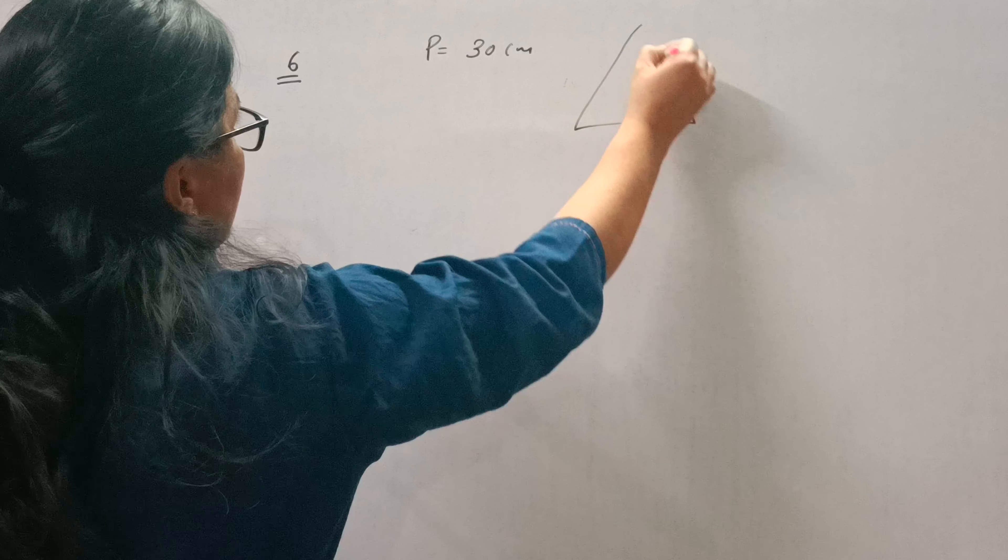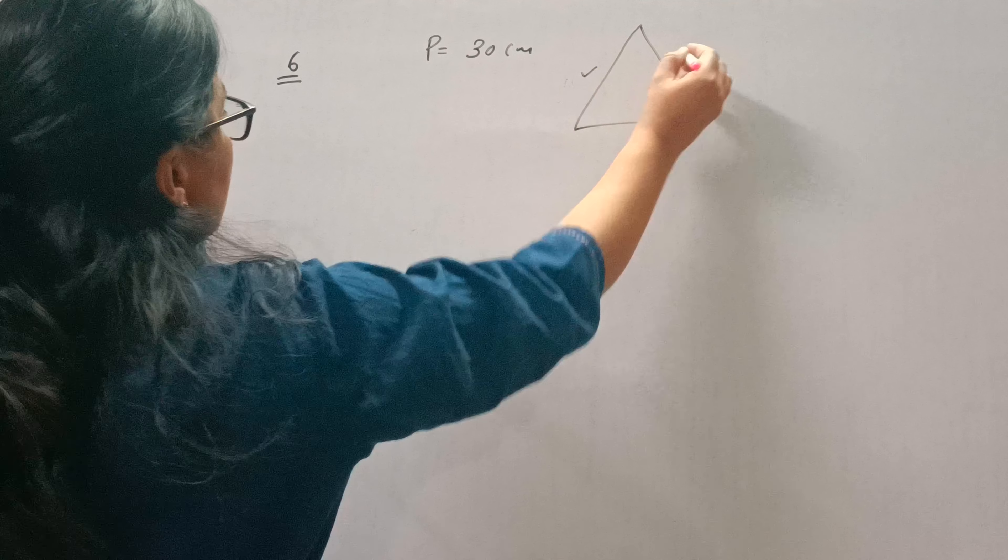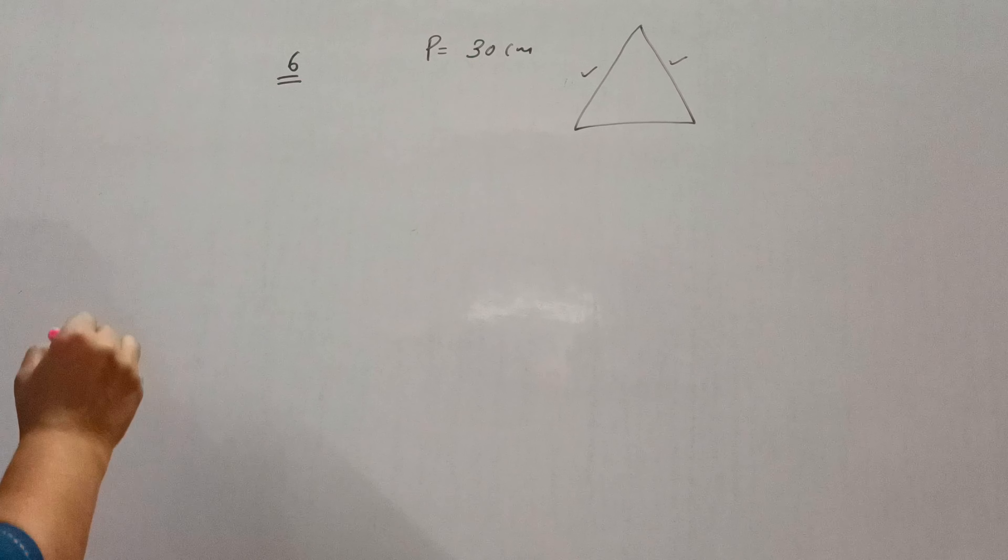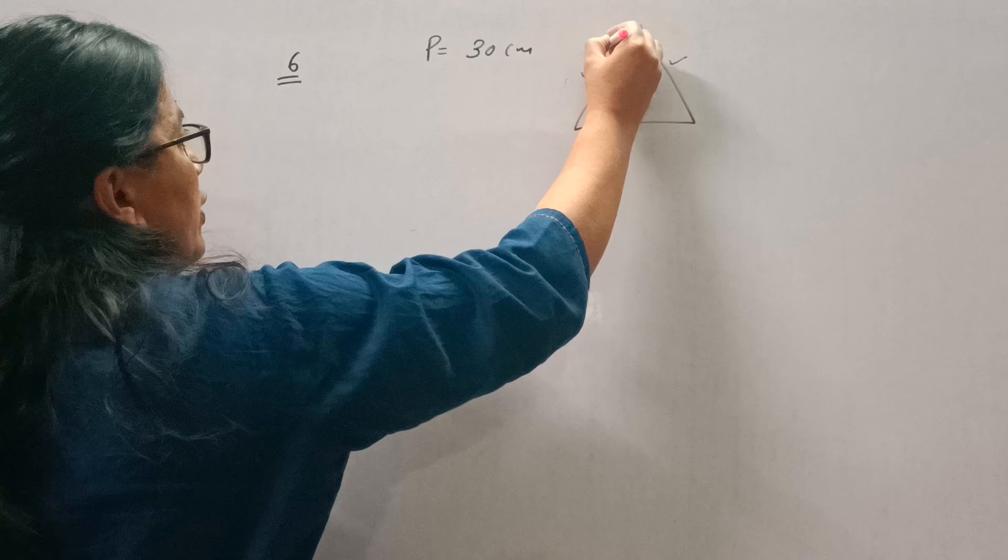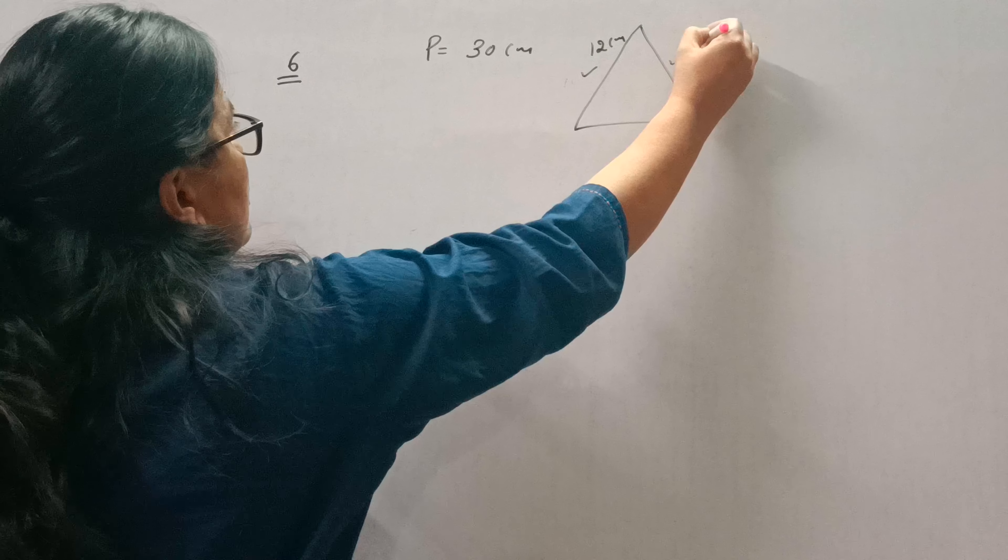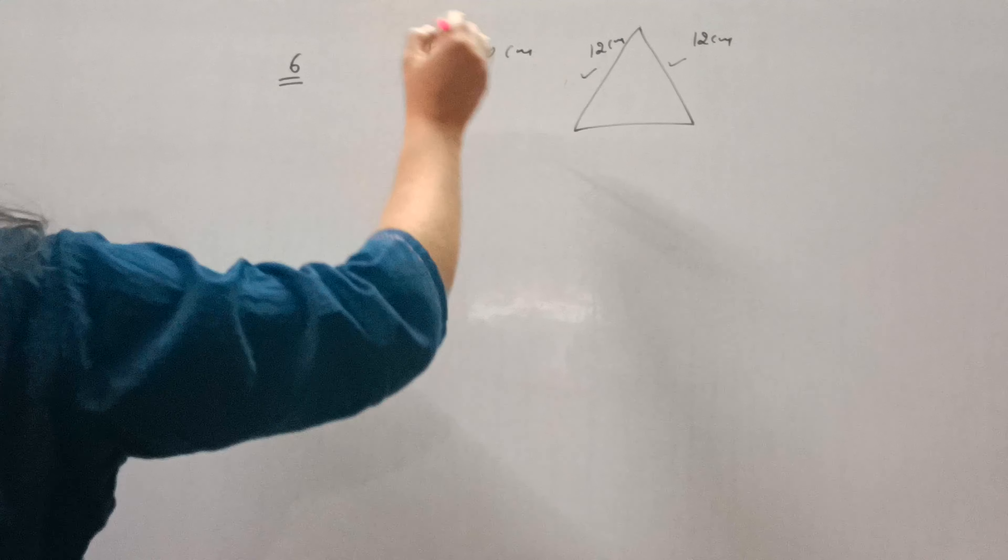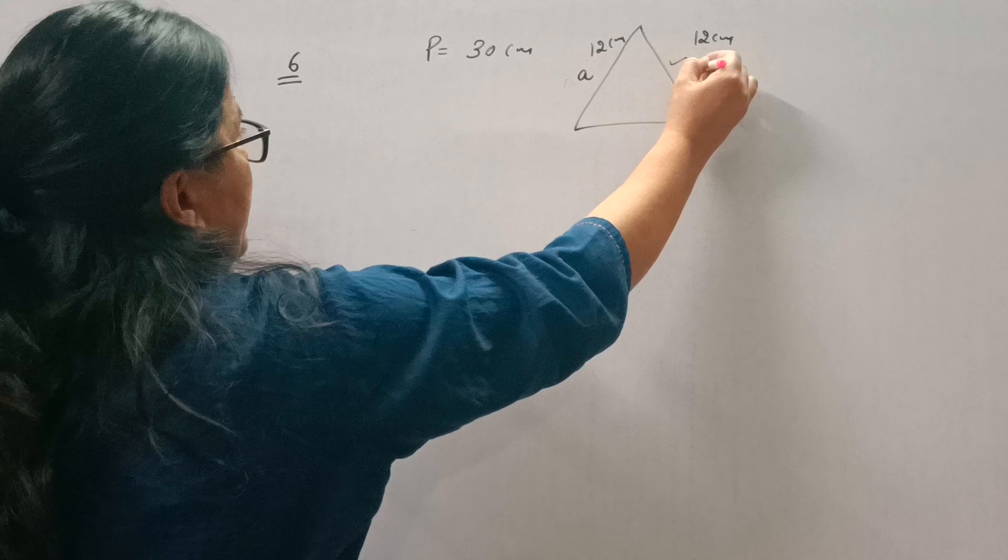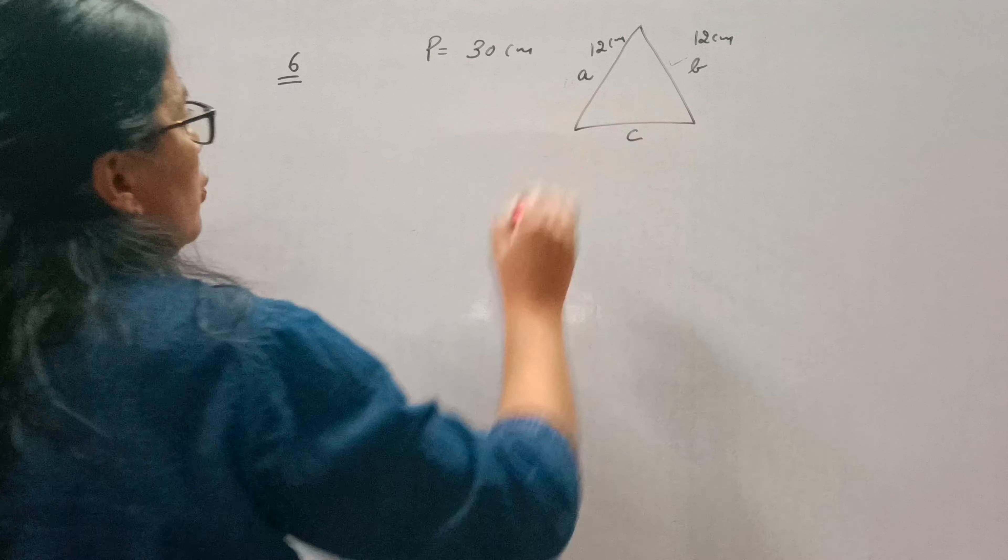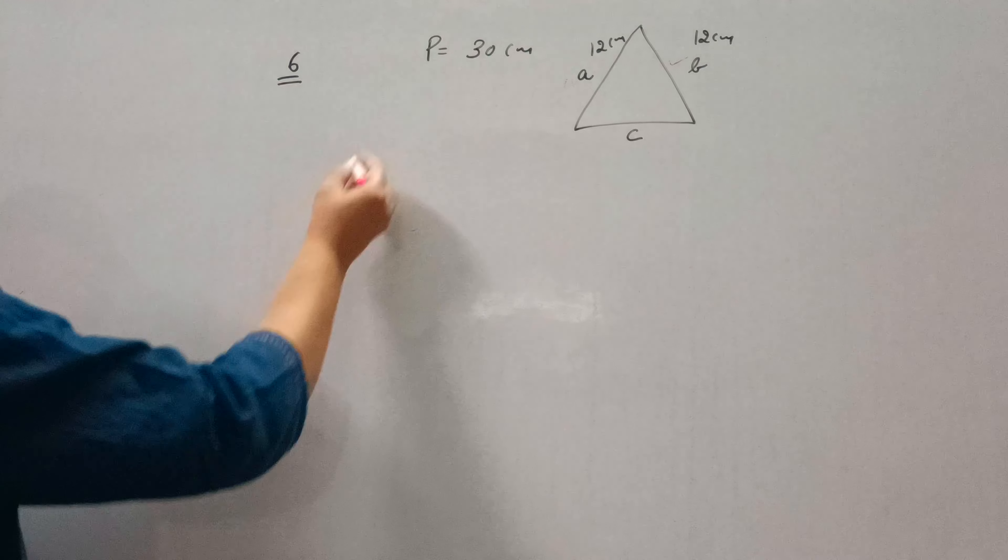An isosceles triangle means two sides are equal. Each of the equal sides is 12 cm. We need to find the area of the triangle. So this is A, this is B, and C is not known to us, but perimeter is given.